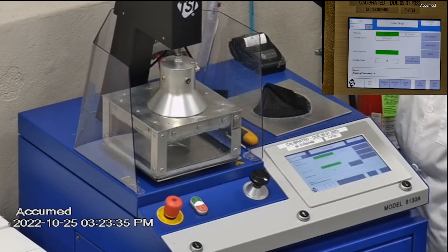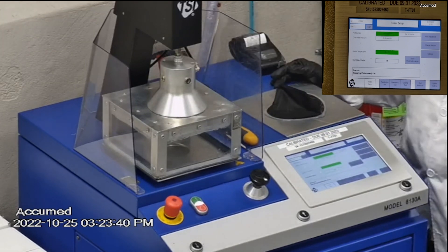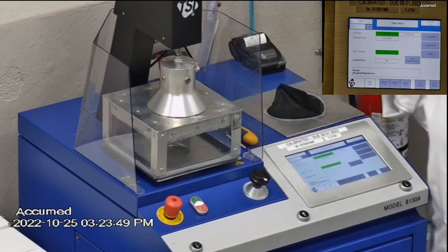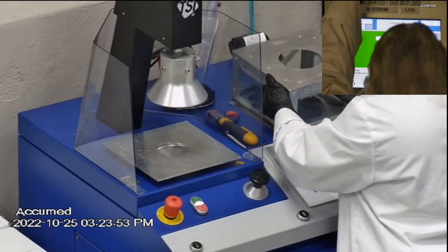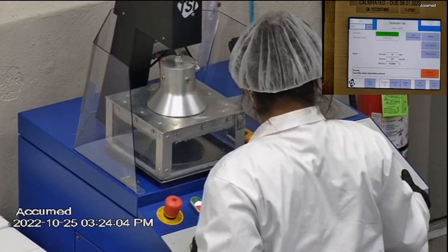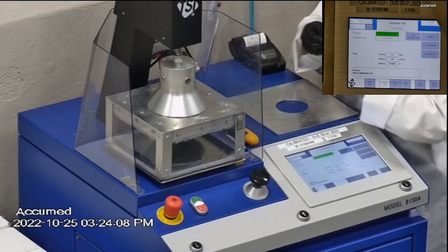F stands for airflow rate which we test at 85 liters per minute. R is for resistance also referred to as pressure drop. This correlates with breathability so the lower the number the more comfortable and breathable the mask is. E stands for filtration efficiency percentage.